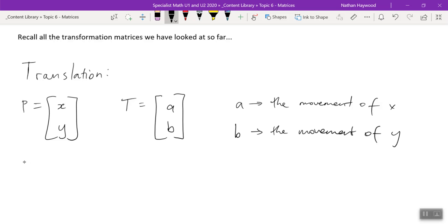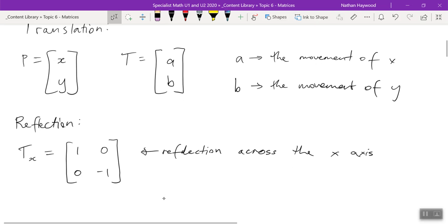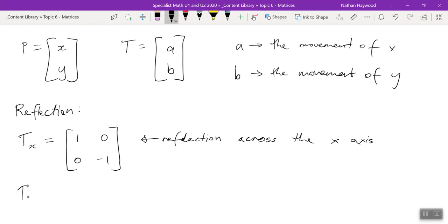What was the one you did after translation? Reflection. So there are two main reflection matrices. I'm going to use the subscript X and subscript Y. This is the reflection matrix across the X axis, hence the subscript X. There's no set way of doing this.